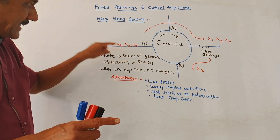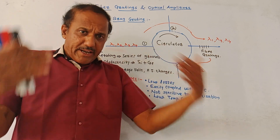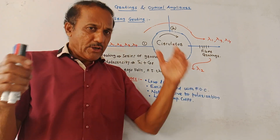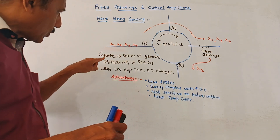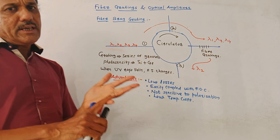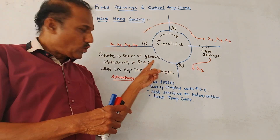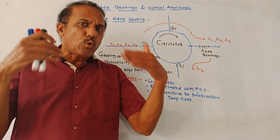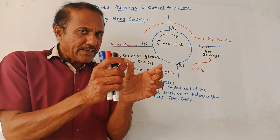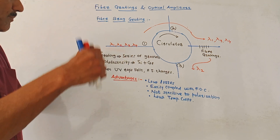This grating represents a series of grooves inside the optical cable. These grooves are created and written in the optical cable. This works on the principle of photosensitivity characteristics of the optical cable. Fiber optic cables are usually made of silicon (Si). If you add a dopant material, germanium, then Si plus germanium becomes photosensitive, causing reflection of a particular wavelength and transmission of the remaining wavelengths.